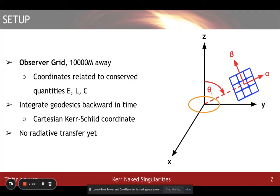For this numerical study, I set up an observer grid that is 10,000 times mass of the black hole away with an inclination angle with respect to the z-axis defined to be perpendicular to the ring singularity. The grid has coordinates alpha and beta, which are related to conserved quantities energy E, angular momentum L, and Carter's constant Q of the photon.